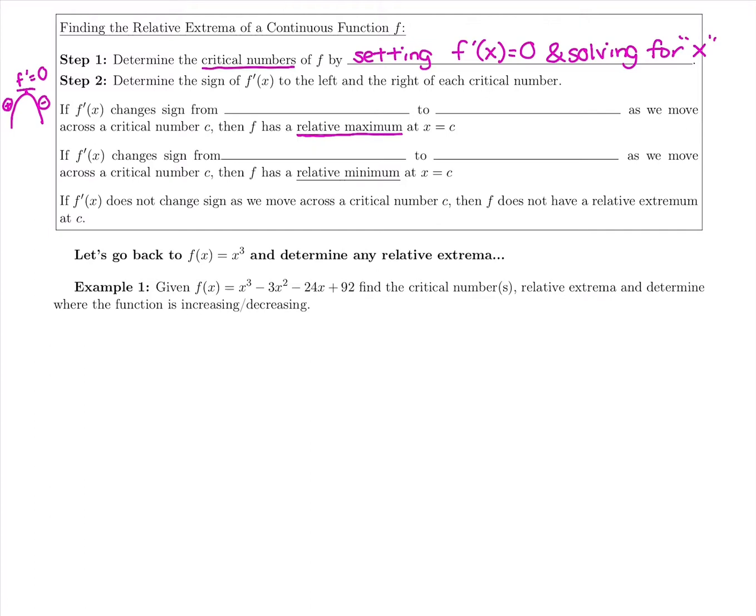So if we switch from a positive to negative derivative as we move across a critical number C, we know we have a relative maxima.